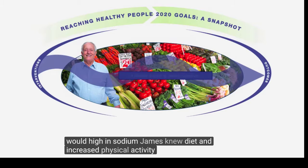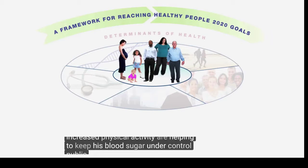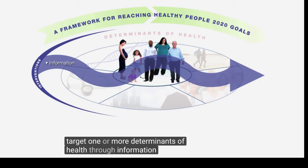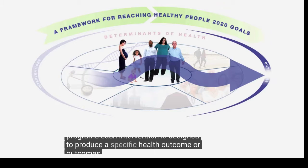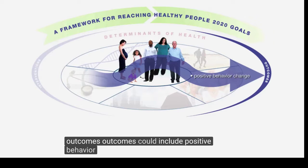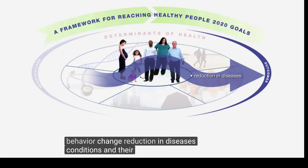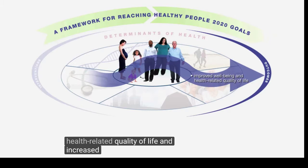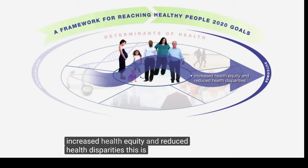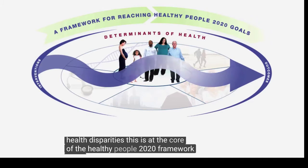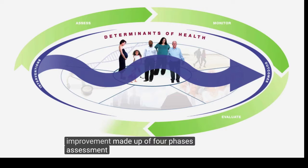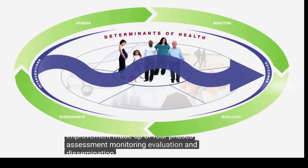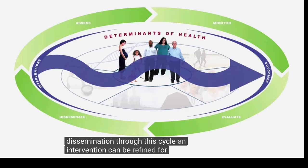James's new diet and increased physical activity are helping to keep his blood sugar under control. Public health interventions typically target one or more determinants of health through information, policies, and programs. Each intervention is designed to produce a specific health outcome. Outcomes could include positive behavior change, reduction in diseases and their risk factors, fewer injuries, improved well-being and health-related quality of life, and increased health equity and reduced health disparities. This is at the core of the Healthy People 2020 framework. Every intervention has a life cycle — a continual process of improvement made up of four phases: assessment, monitoring, evaluation, and dissemination. Through this cycle, an intervention can be refined for greater effectiveness.